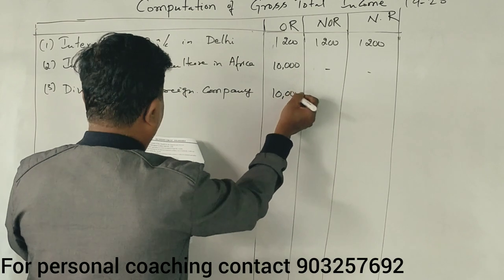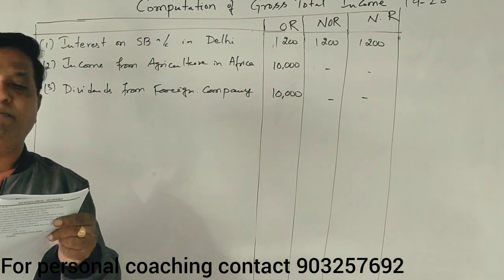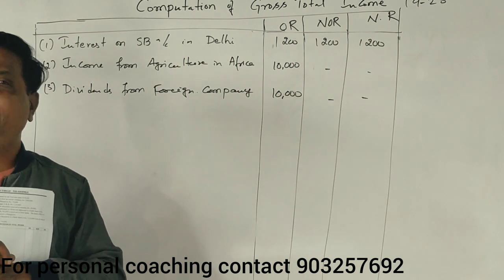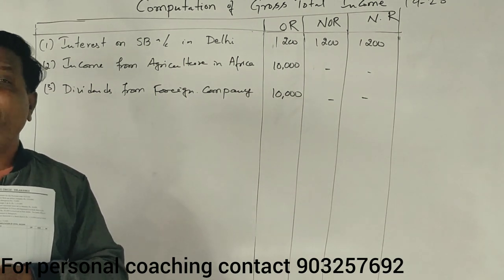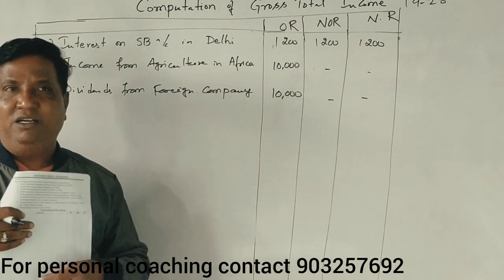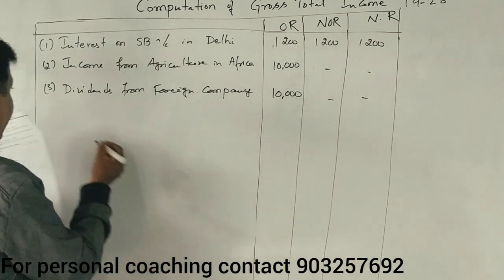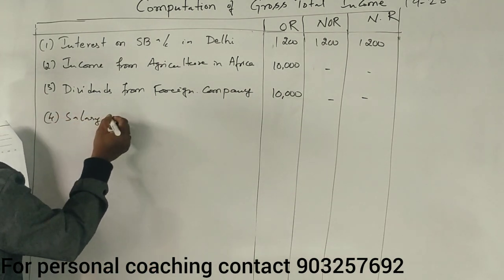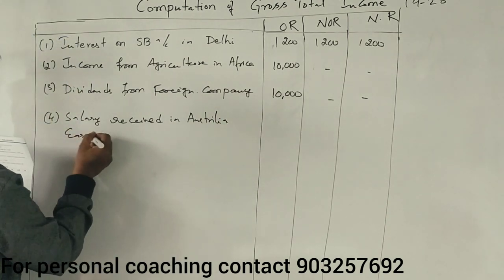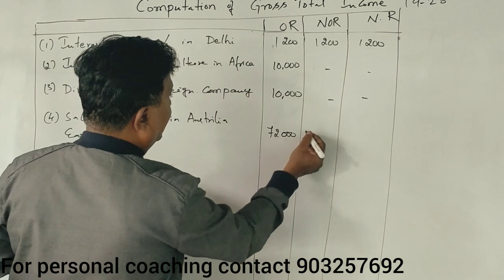Salary drawn for three months for working in the Indian embassy's office in Australia. Salary received there — received in Australia — paid by the Indian government. Salary income is taxable. Salary received in Australia, earned in India. ₹72,000 — taxable in all three cases.